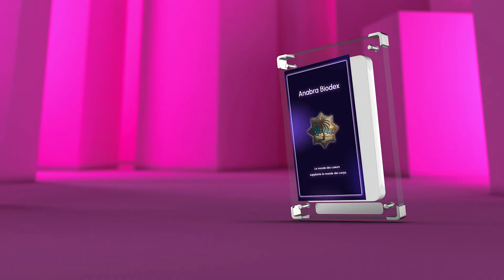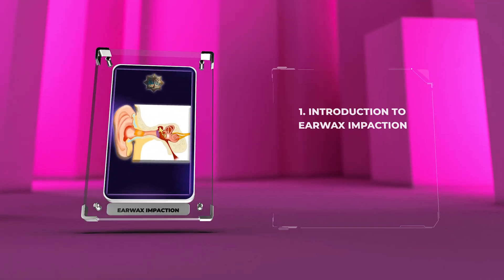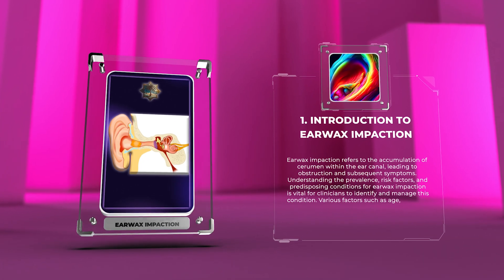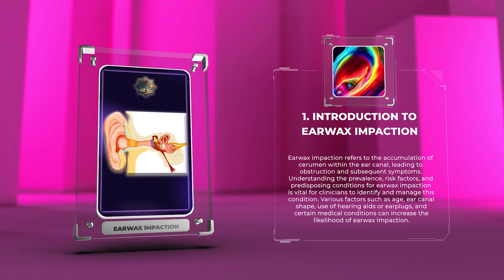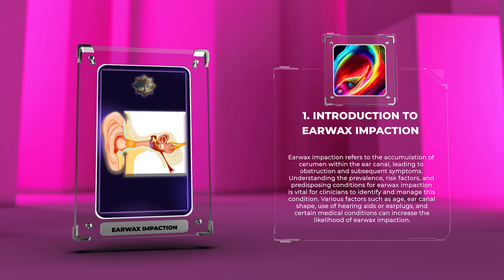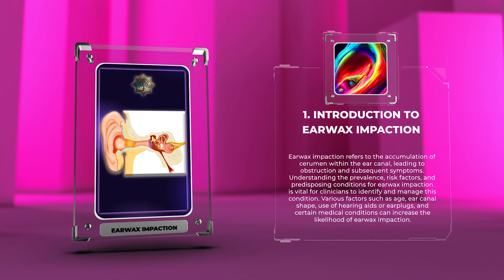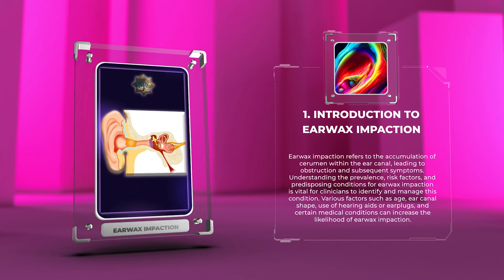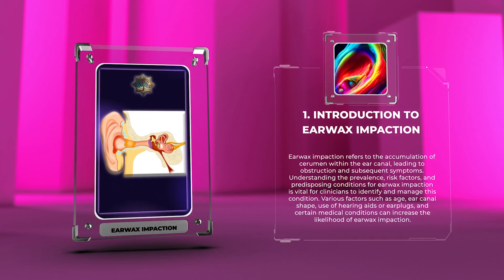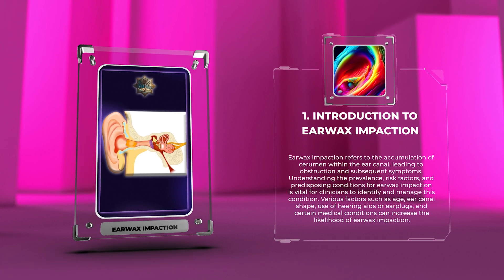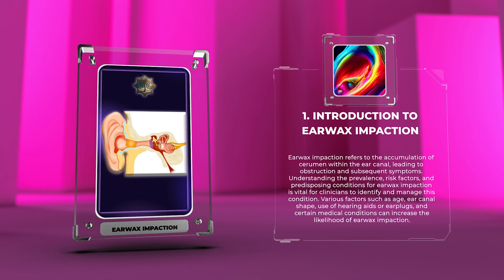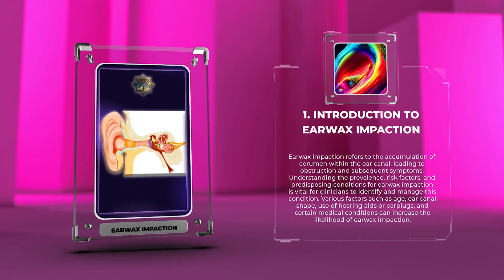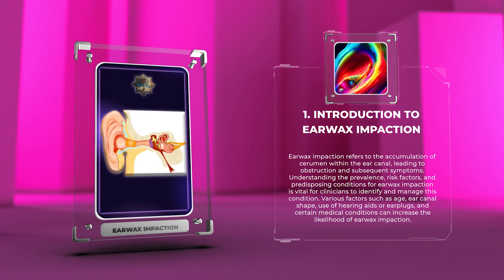Earwax impaction refers to the accumulation of cerumen within the ear canal, leading to obstruction and subsequent symptoms. Understanding the prevalence, risk factors, and predisposing conditions is vital for clinicians. Various factors such as age, ear canal shape, use of hearing aids or earplugs, and certain medical conditions can increase the likelihood of earwax impaction.